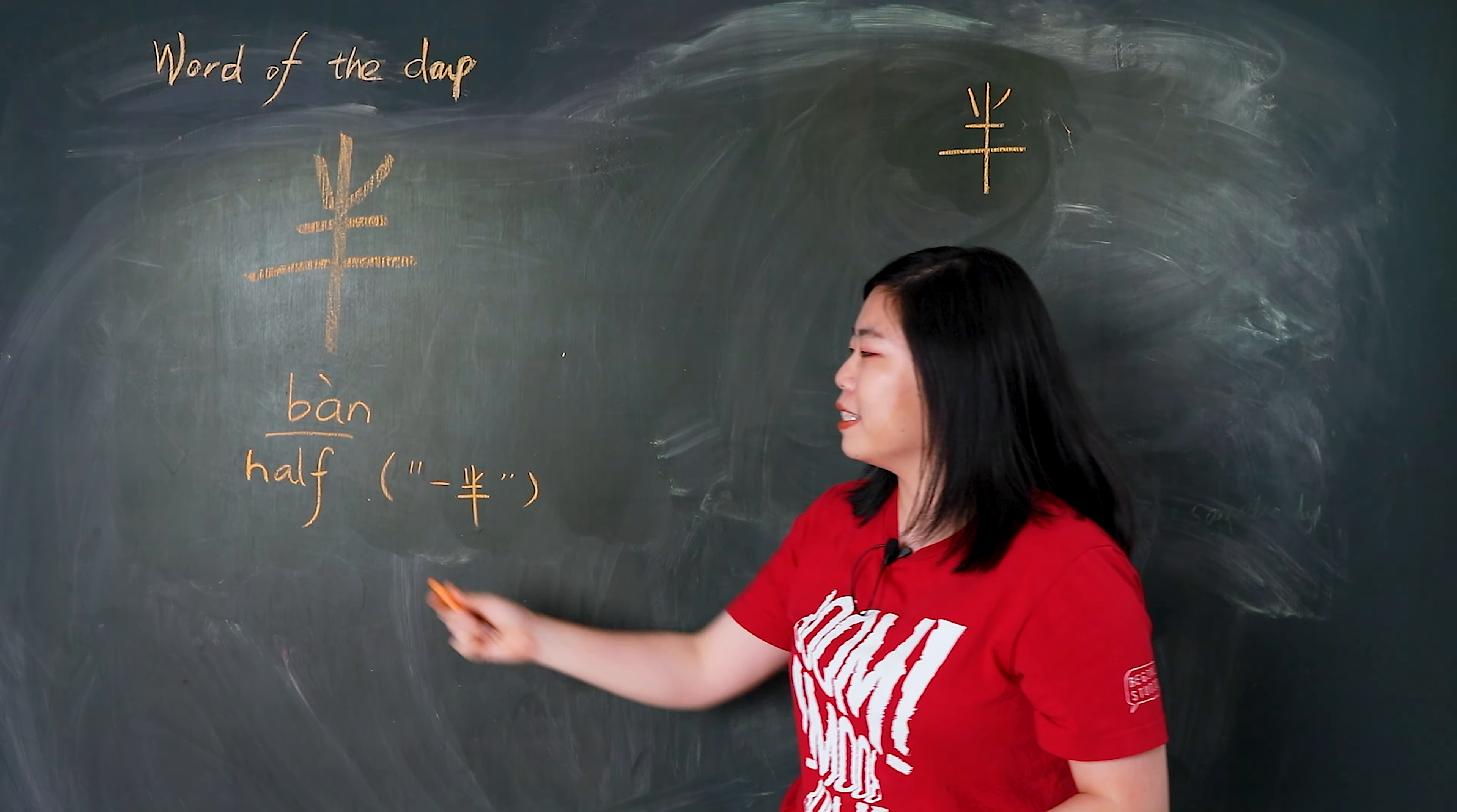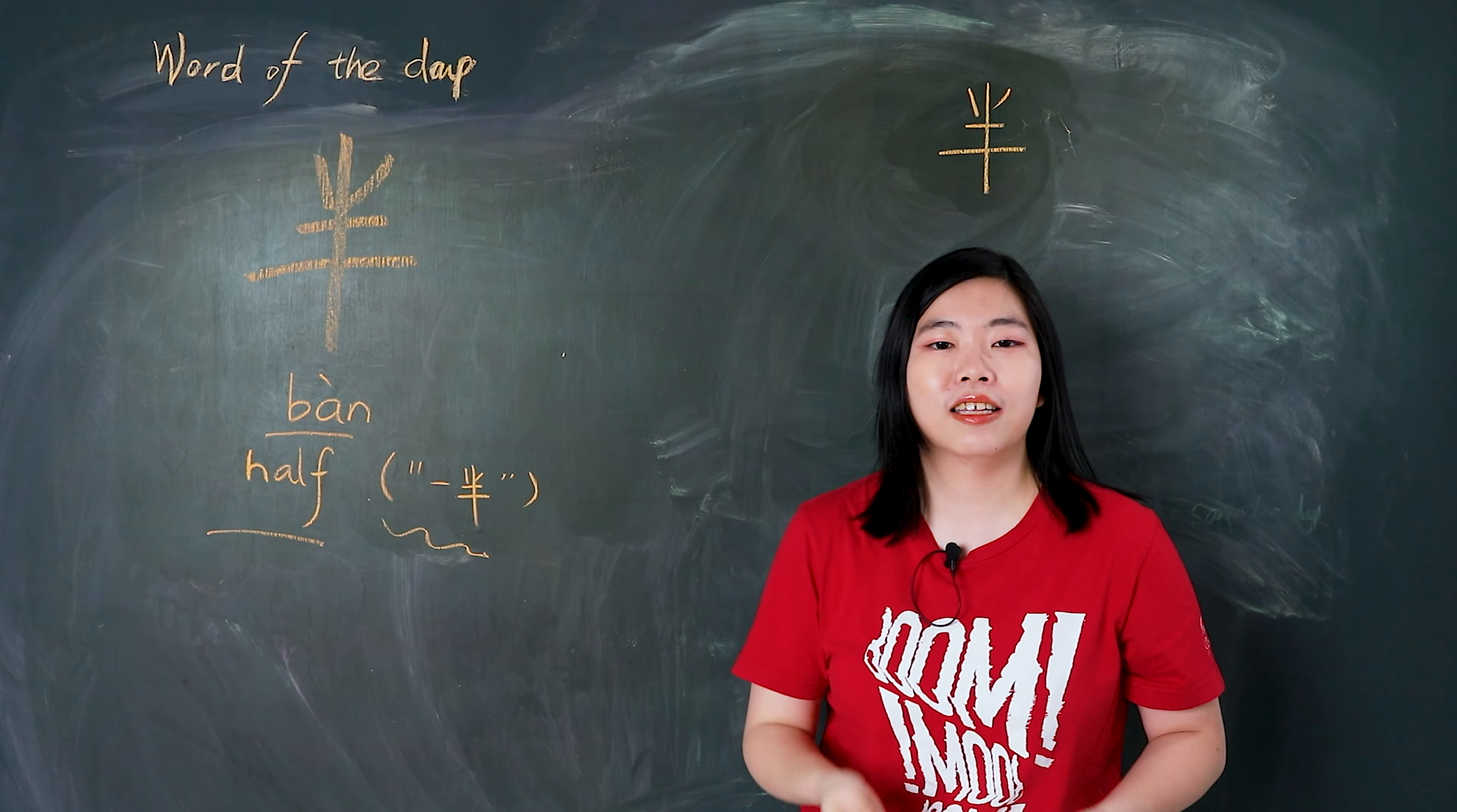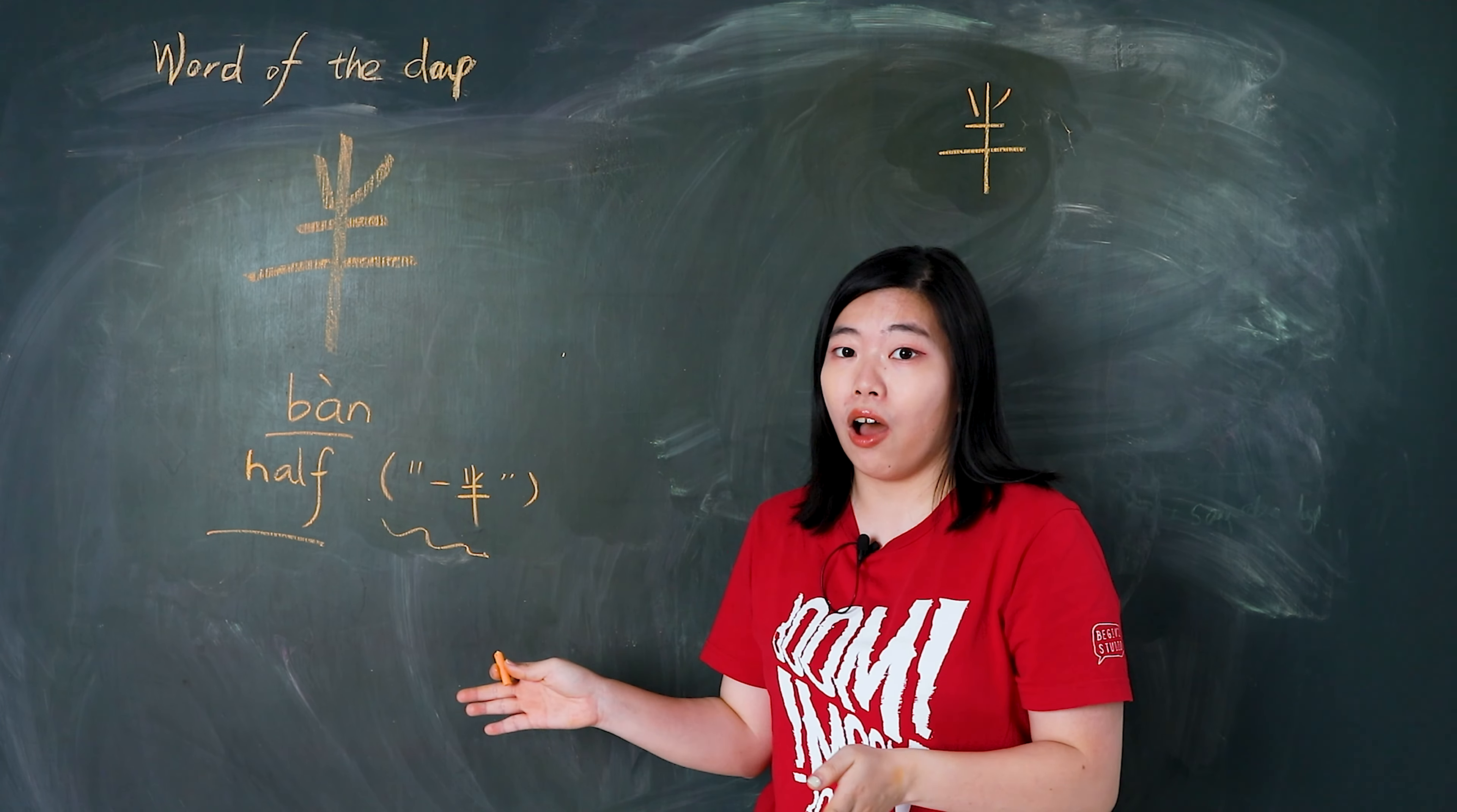半 means half. So we always say 一半. For example, half cake, 一半的蛋糕.